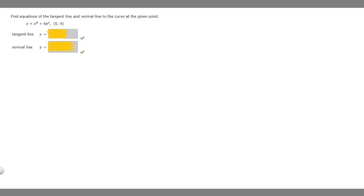In this problem, we're asked to find the equations of the tangent line and normal line to the curve at the given point. We're given the function y equals x to the 4th plus 4e to the x, and we have the point (0, 4).